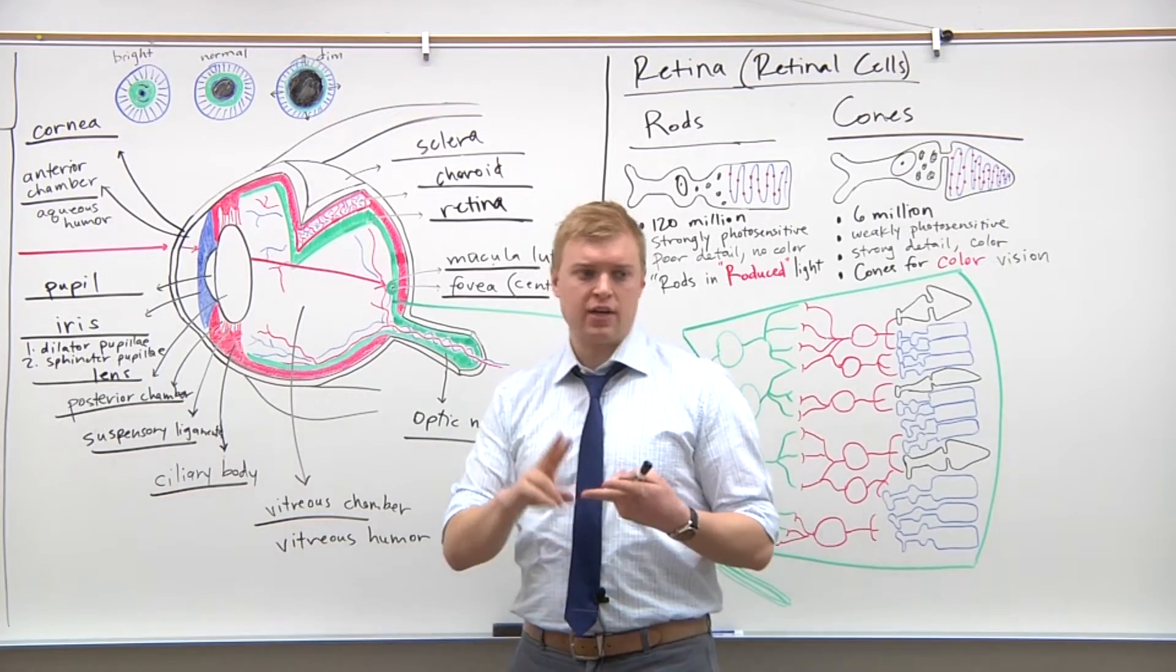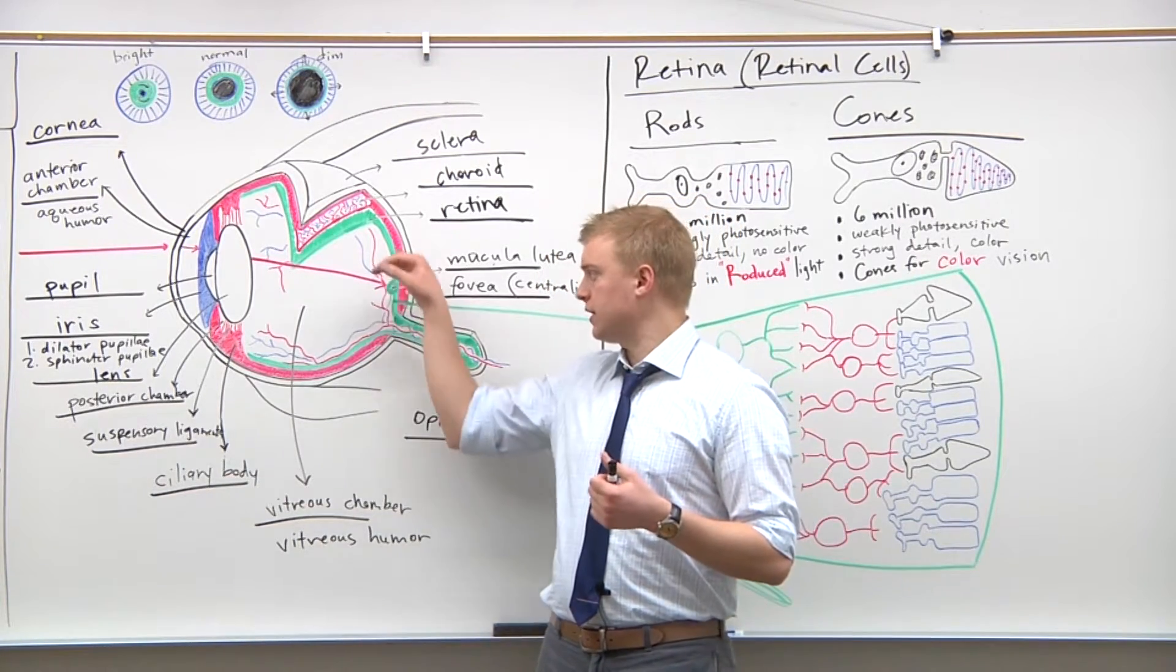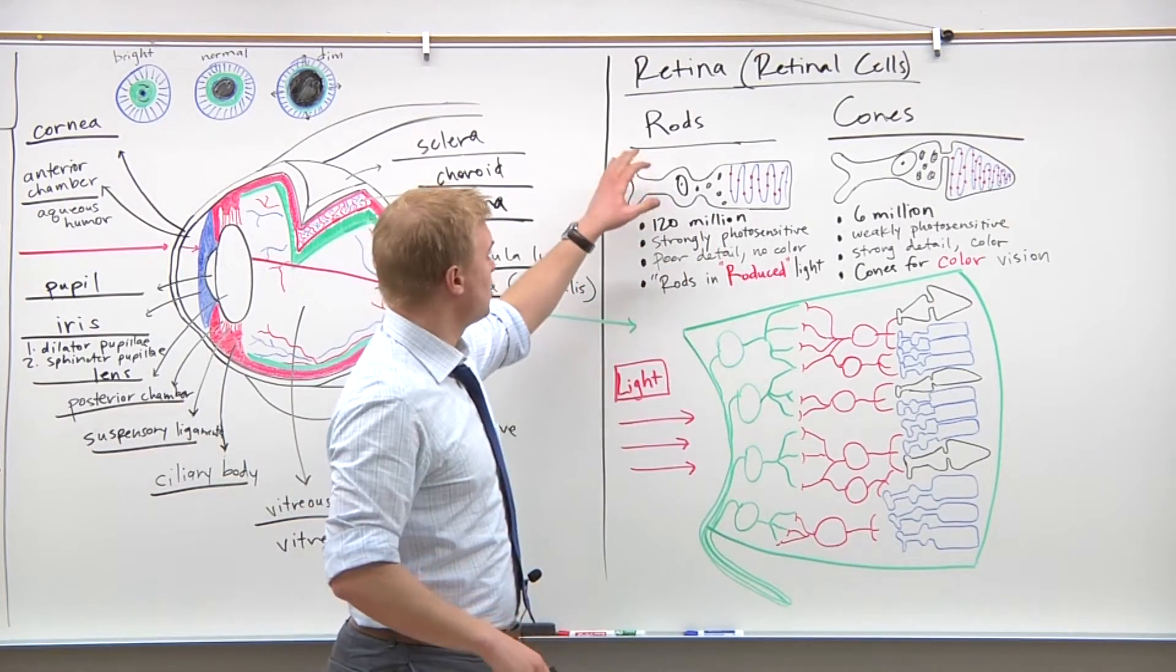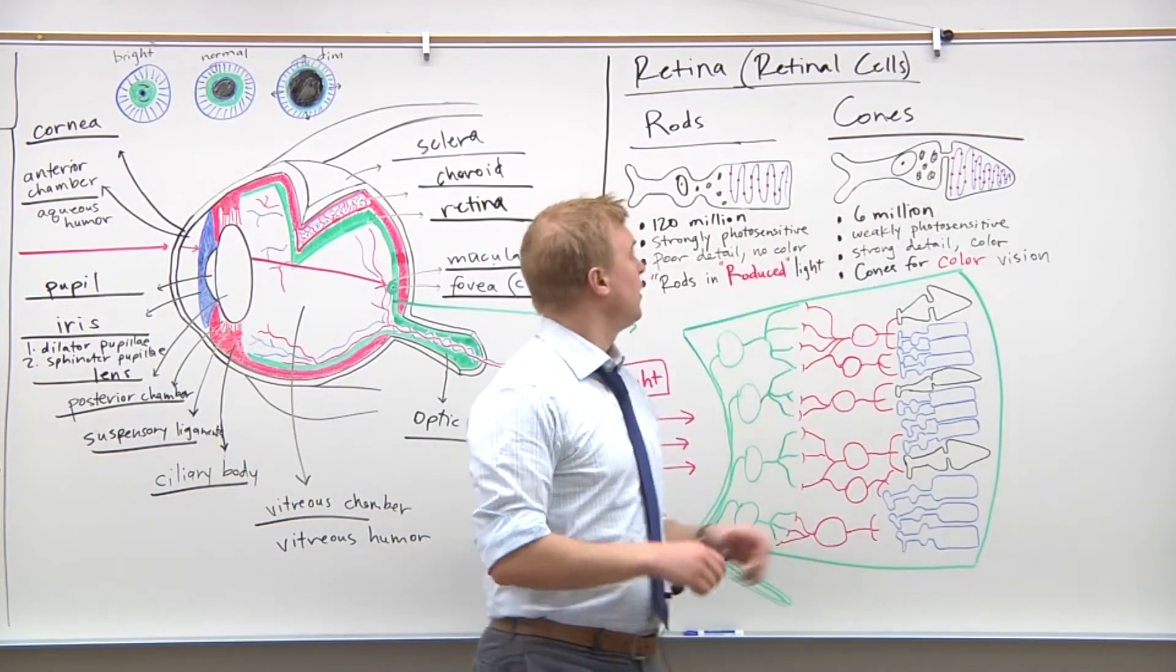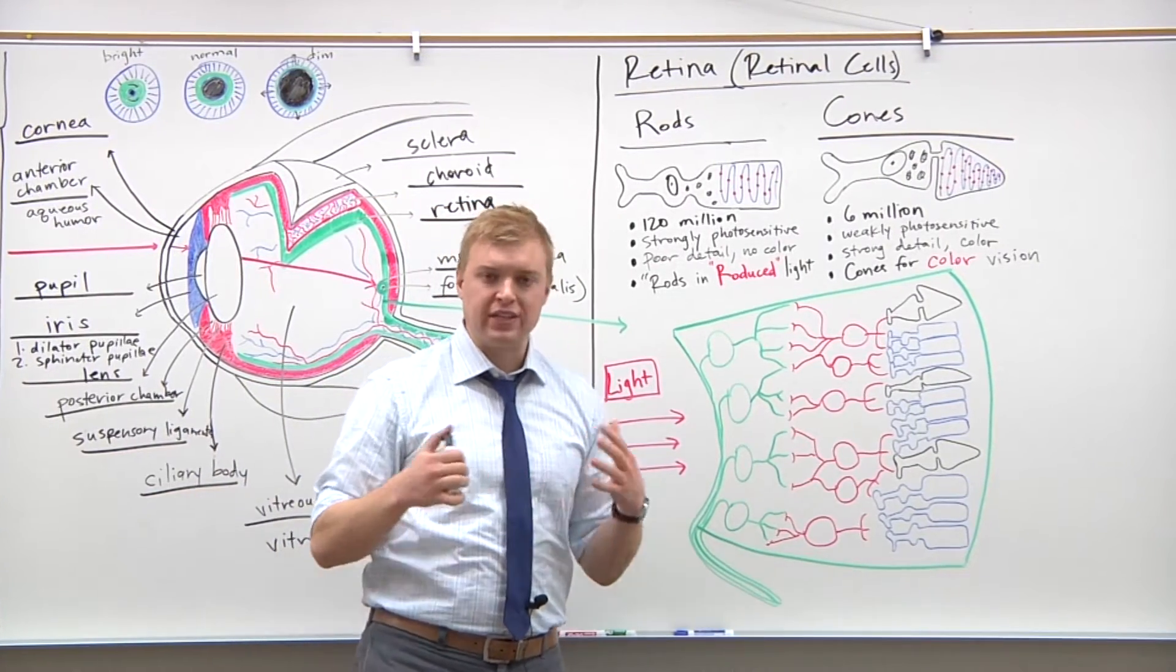There are two different kinds of photoreceptor or retinal cell contained here in the retina, and I've outlined them up here. We have the rods and the cones, and because there's two, this is where we get the term duplicity theory of vision.